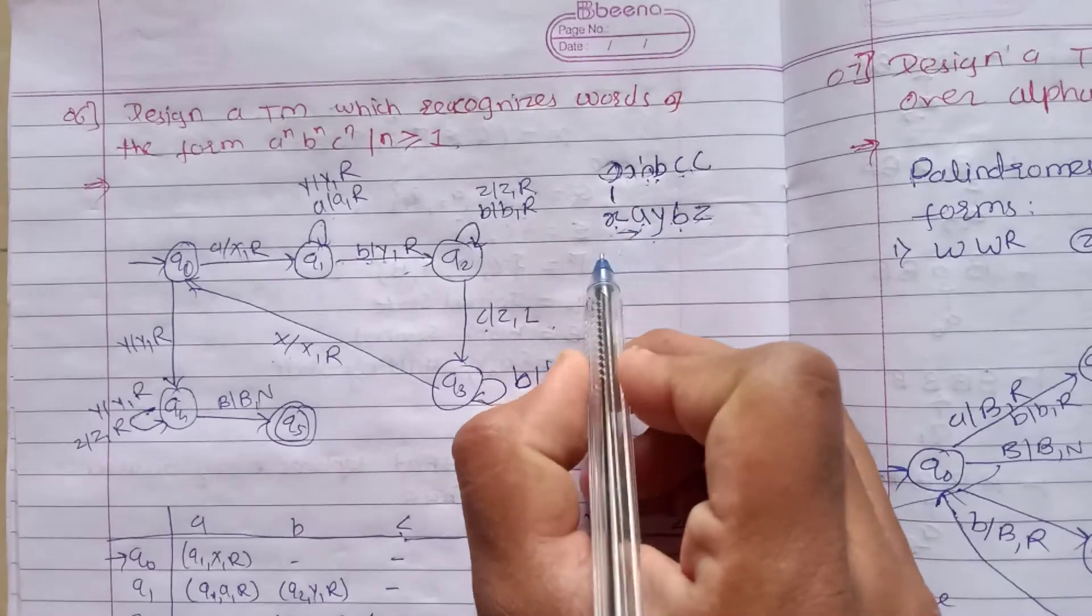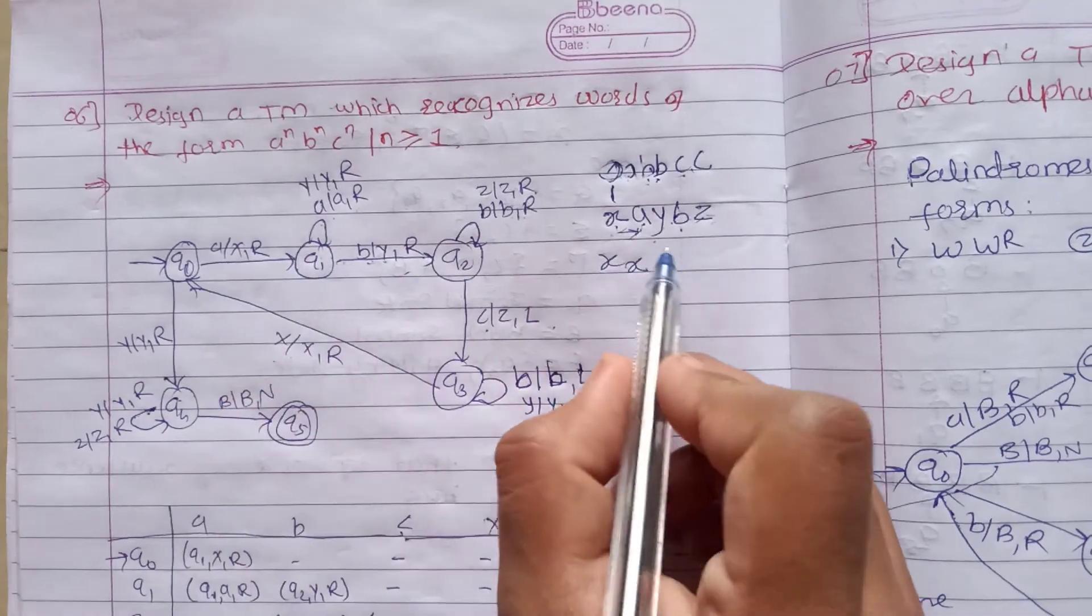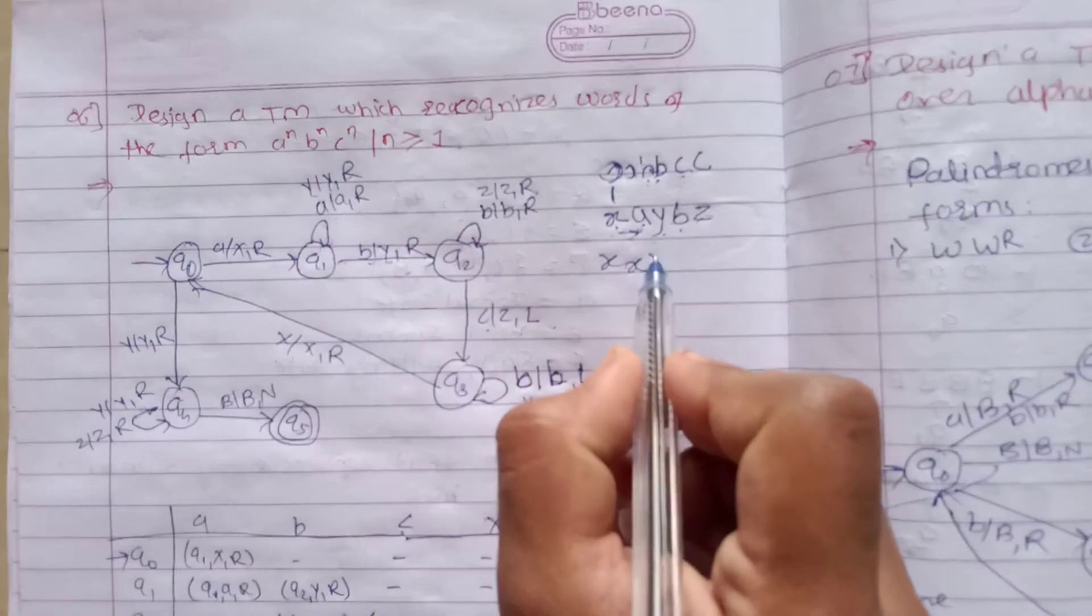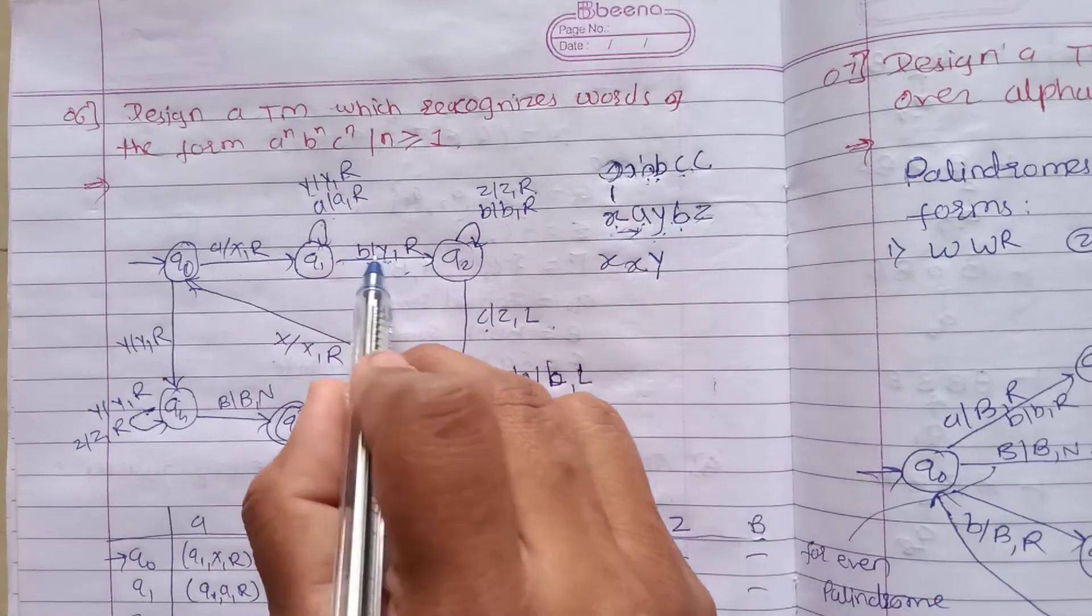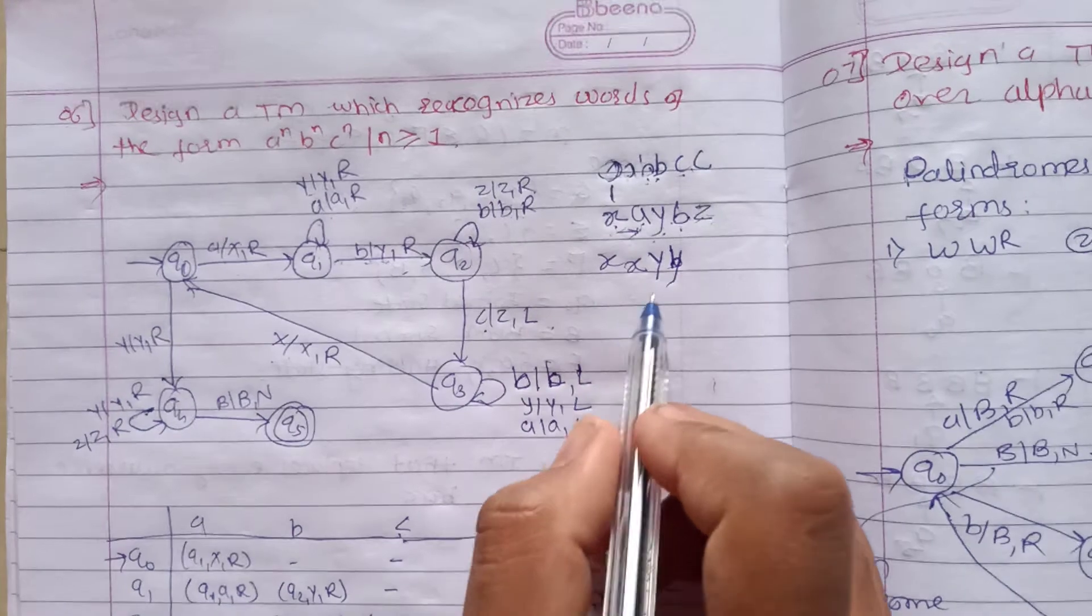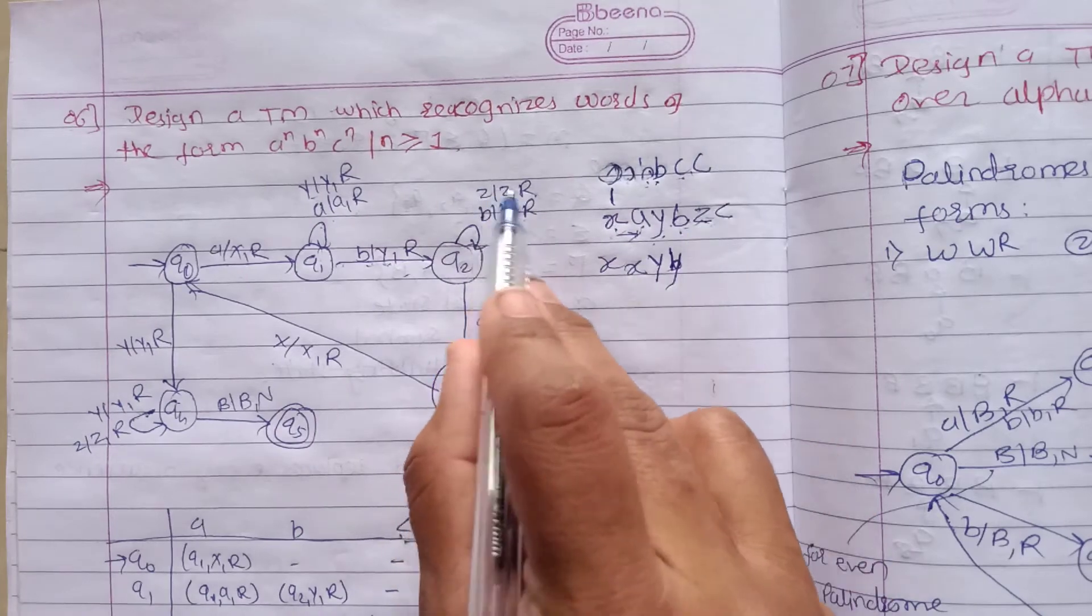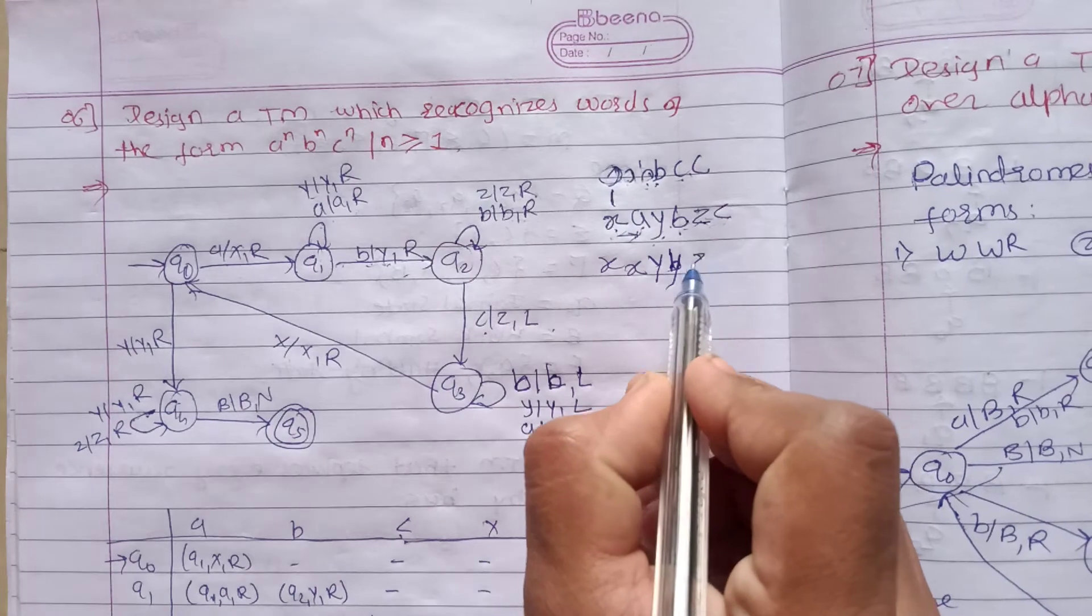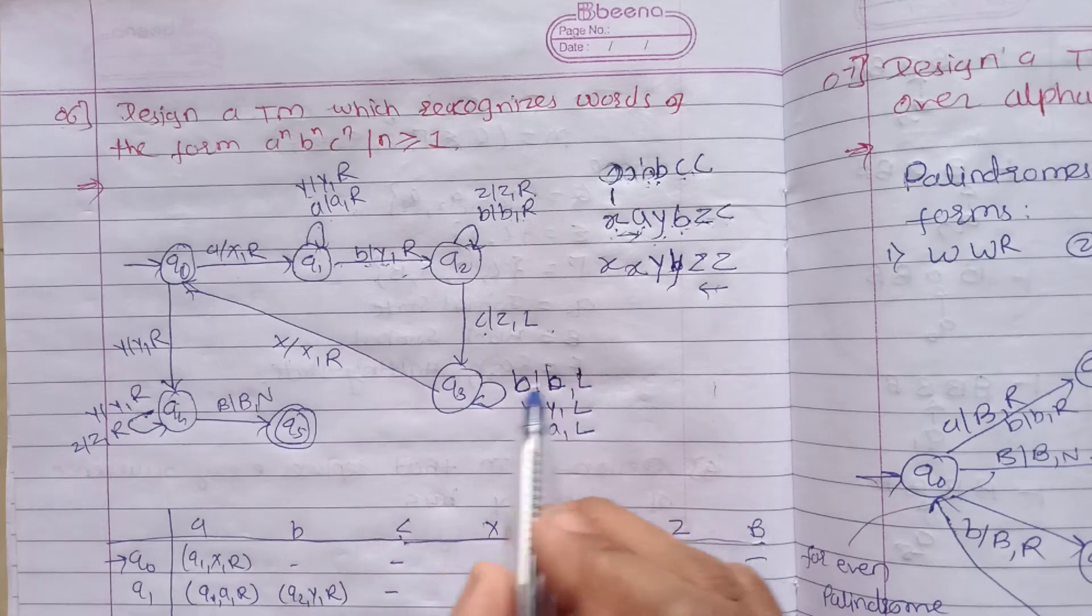Again a is encountered, and it's converted to x. Then we get y, y will be as it is and we move right. So we put a loop for y. When b is encountered, we convert it to y. After that we get z, z should be as it is. Then we get c, so we convert c to z and move left.